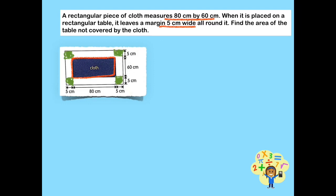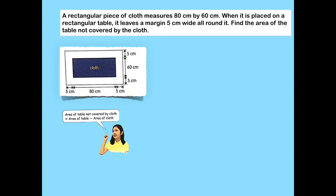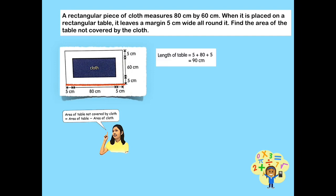What is the length of the given table? We will be using the whole part-part strategy. Let's look at the whole picture, which is made up of the area of the table together with the rectangular piece of cloth placed on top of it. Let us first find the area of the rectangular table. By looking at the given picture, the length of the table is made up of 5 cm, 80 cm, and 5 cm. To get the length of the table, we add 5 plus 80 plus 5, which is 90 cm.